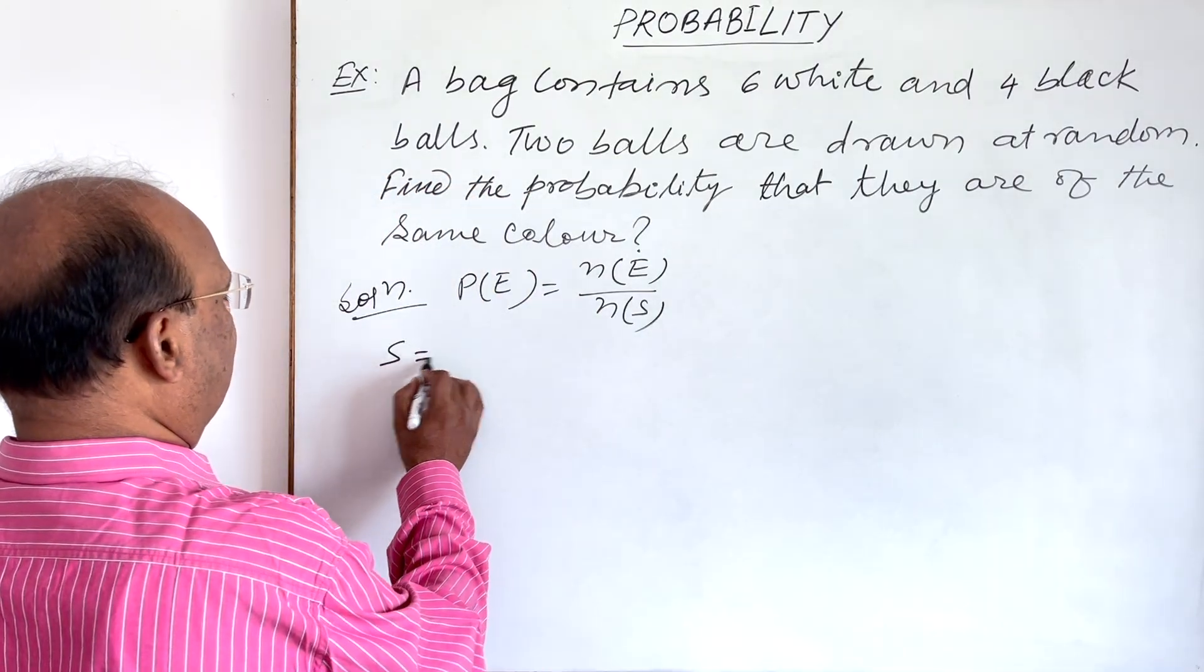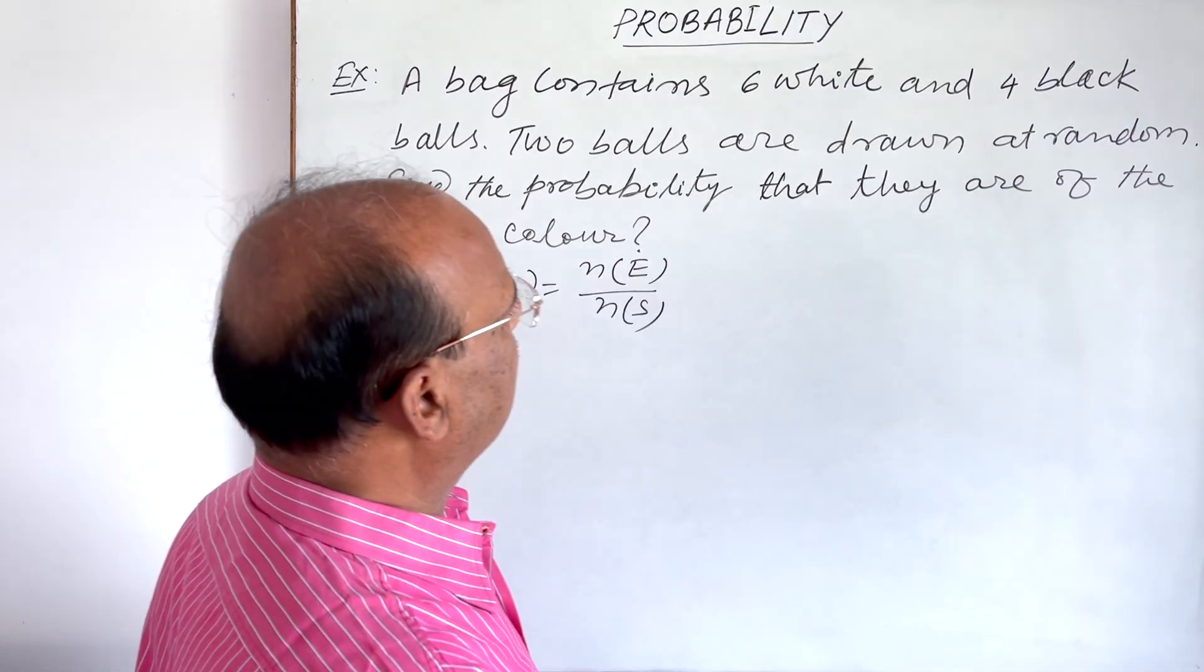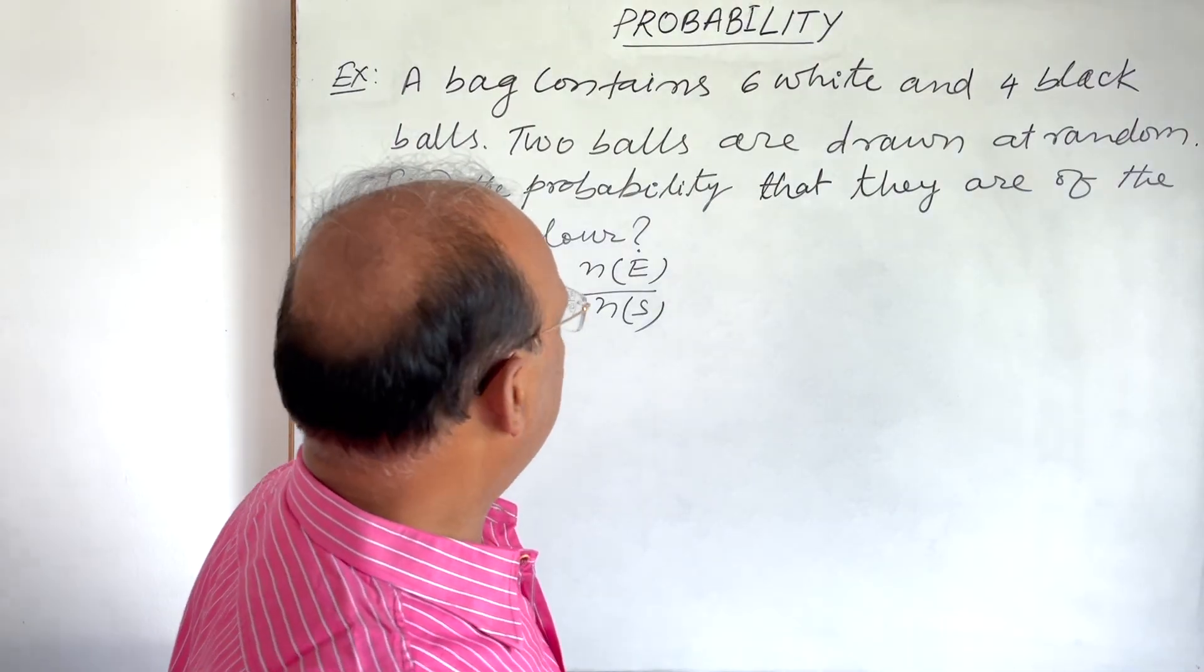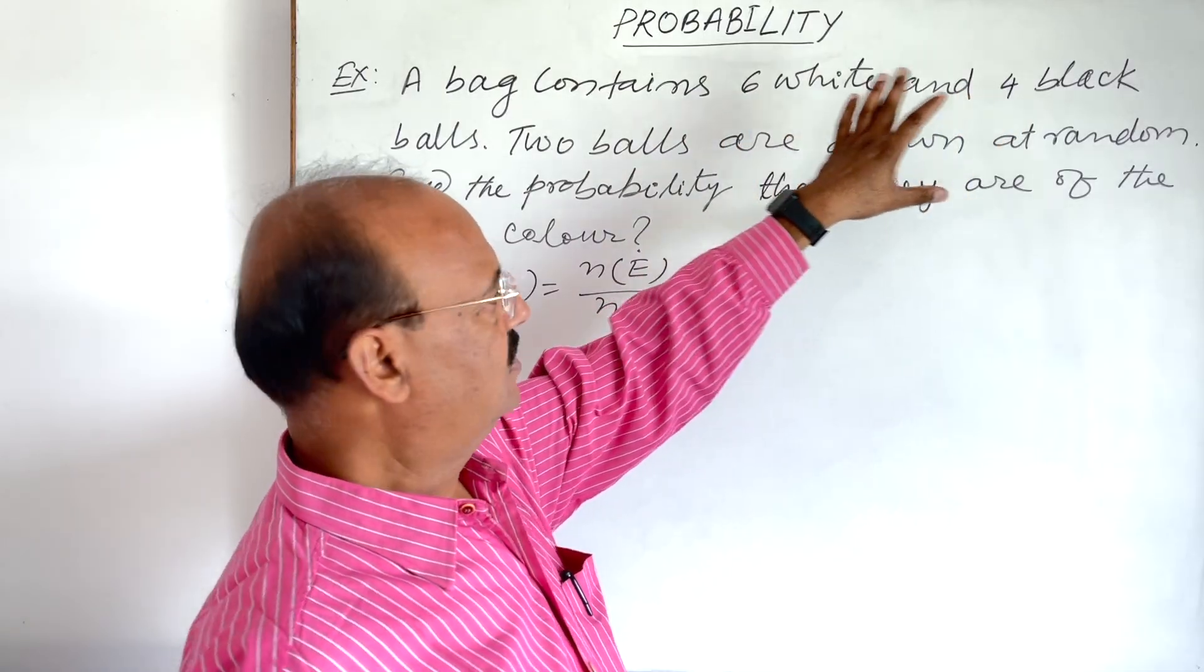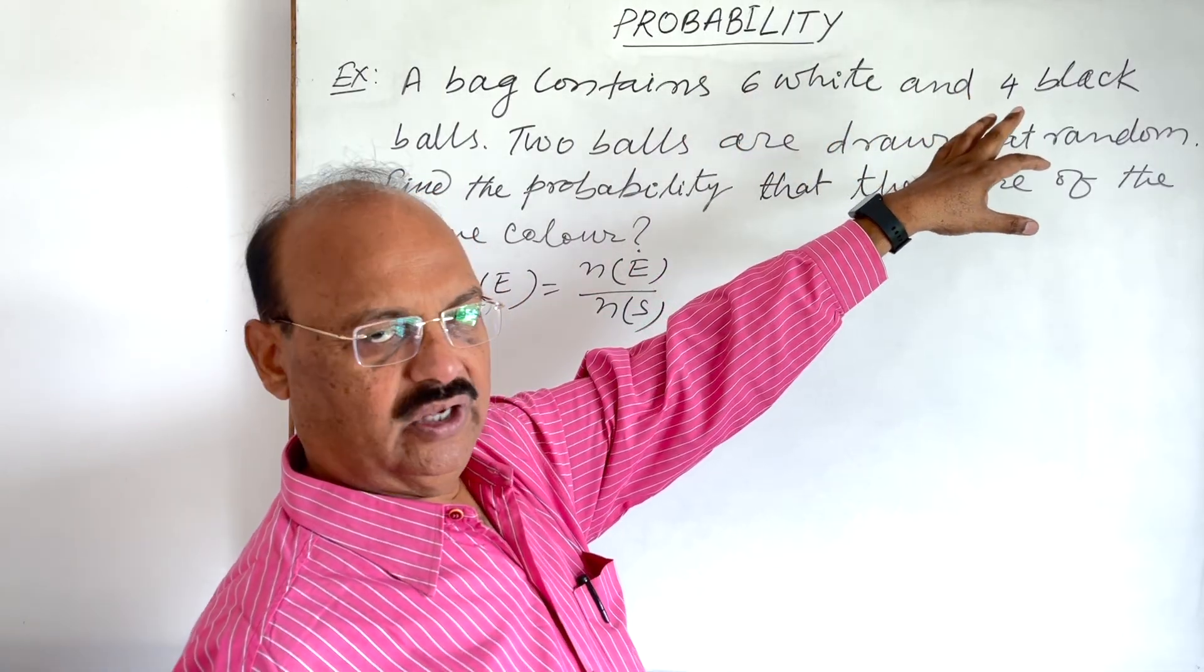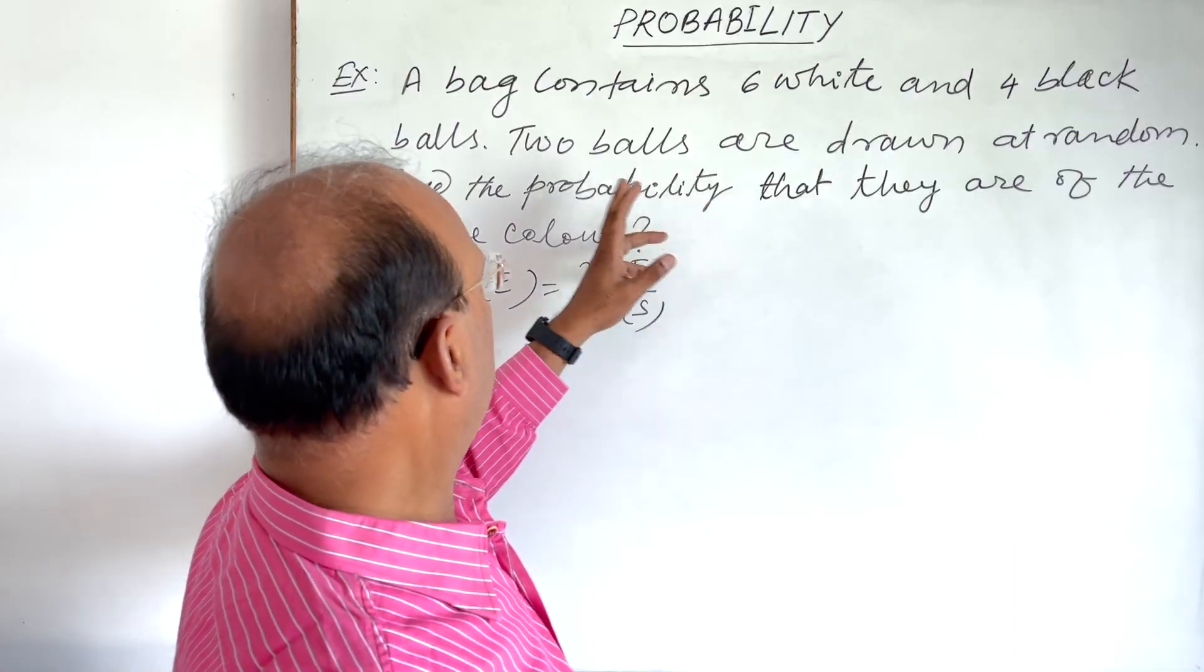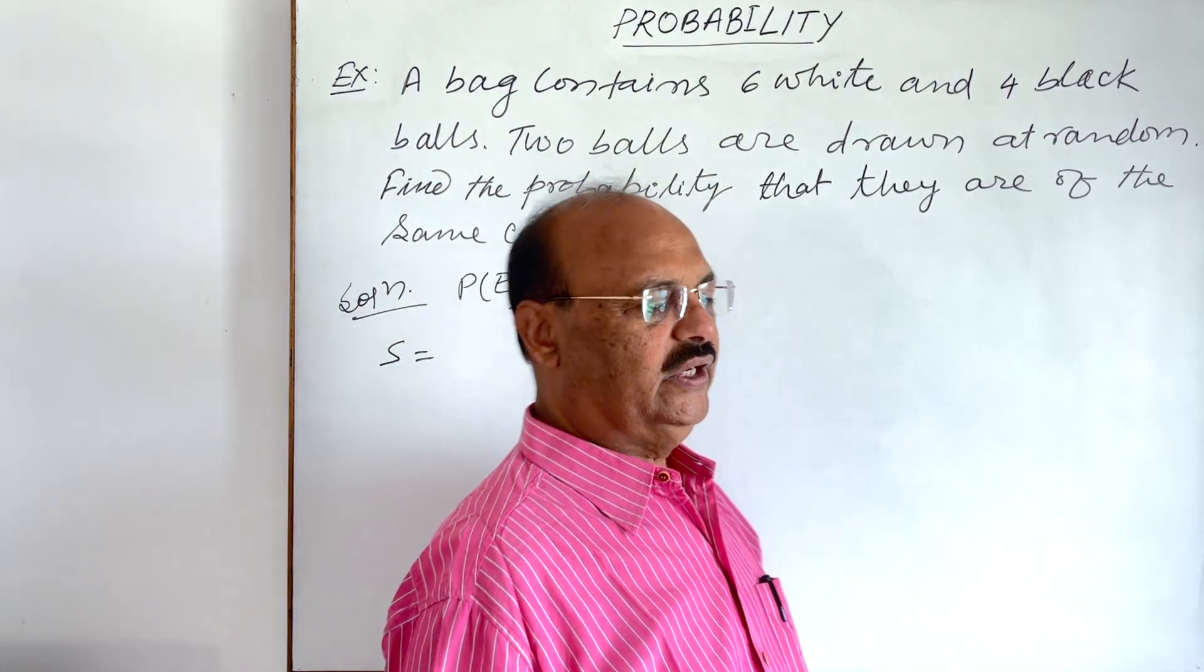First of all, let us see what is S, what is sample space. Sample space is out of these ten balls, six white and four black balls, we have to draw two balls. So in this case, what is the total number of outcomes?